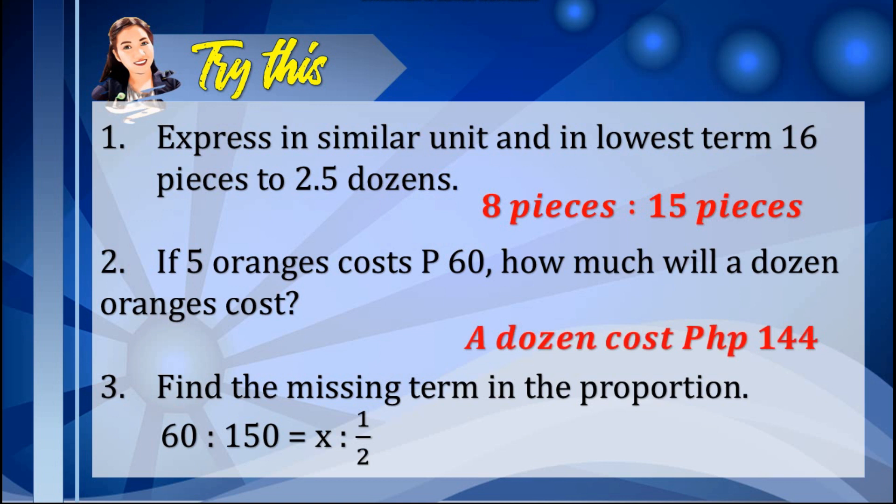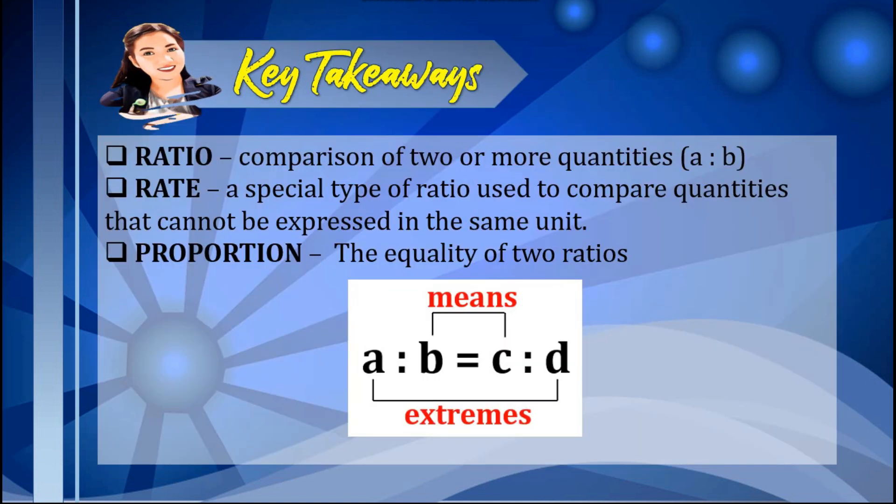What are the key takeaways for this lesson? When we say ratio, it is a comparison of two or more quantities. When we say rate, it is a special type of ratio used to compare quantities that cannot be expressed in the same unit. And proportion is the equality of two ratios, wherein the product of the outer terms is called extremes and the product of the inner terms is called means.